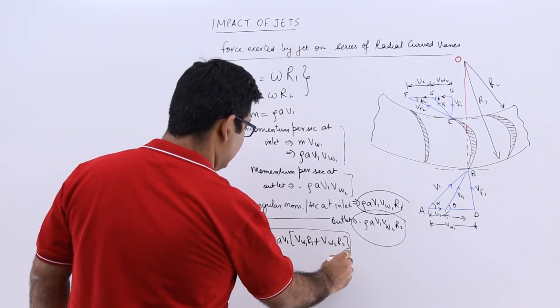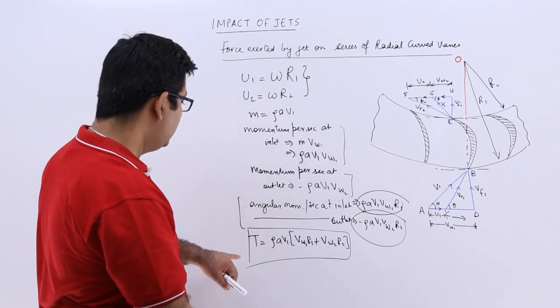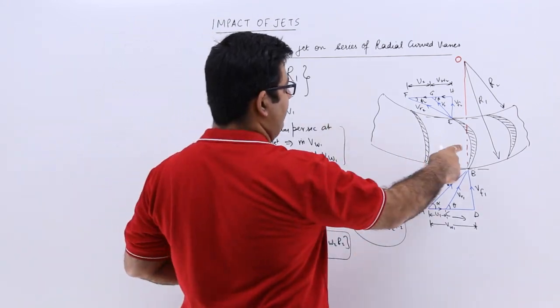Why plus? Because minus and minus will give you plus. This is the torque exerted on this wheel.